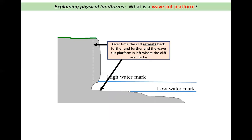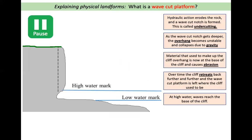Over time the cliff retreats back further and further and the wave-cut platform is left where the cliff used to be. The cliff falls down again and again, going back and back, and what is left is this long wave-cut platform. I'd like you to pause the video, draw your own diagram, and label it fully using the boxes provided.